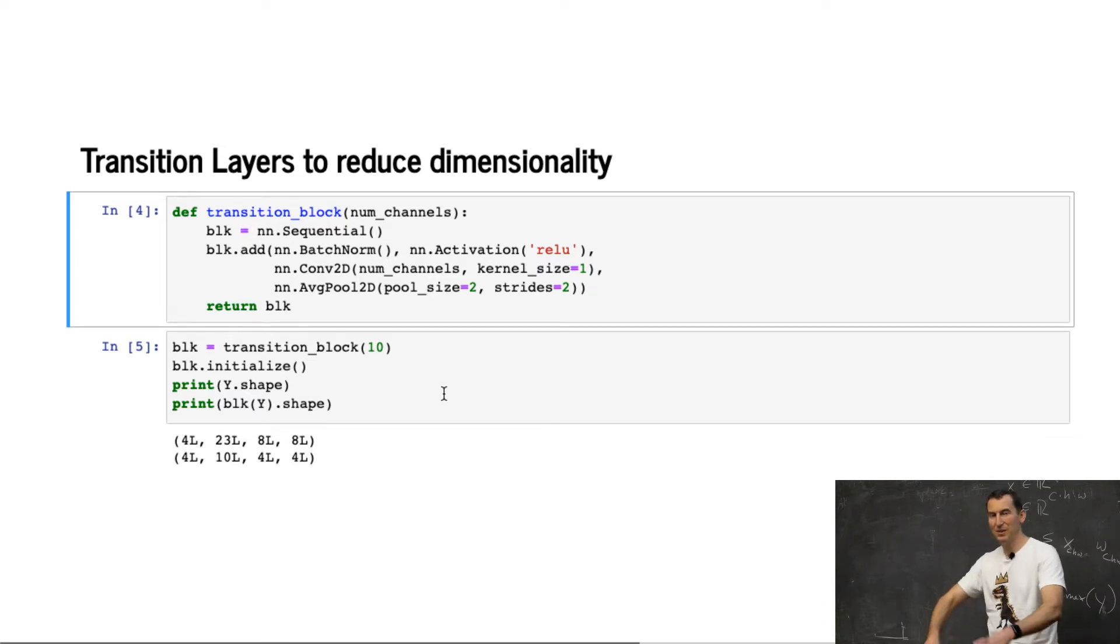I basically have this stage where my embedding explodes in terms of number of channels, and then I collapse it back to something more manageable. At the same time, I'm reducing the resolution as well. That's the right thing to do because you don't want to reduce the resolution and then build up the features, because otherwise you've already thrown all the relevant pieces away.